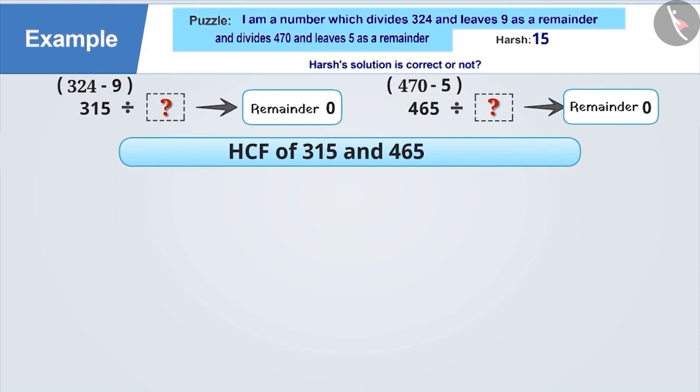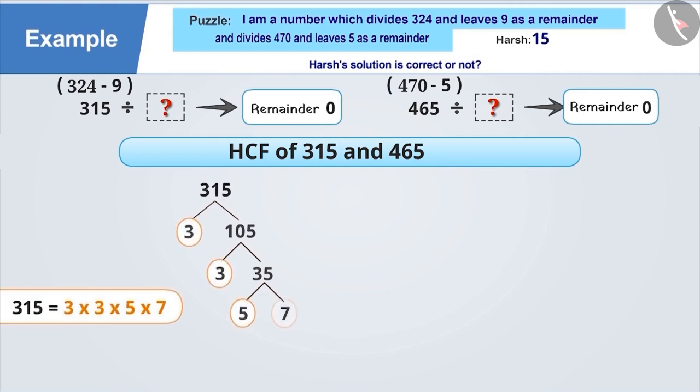Let's find out the HCF of 315 and 465. First, perform the prime factorization of 315. We get 315 = 3 × 3 × 5 × 7. Now perform the prime factorization of 465. We get 465 = 3 × 5 × 31.